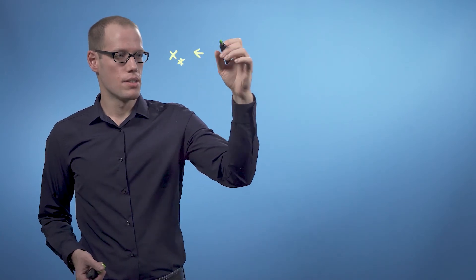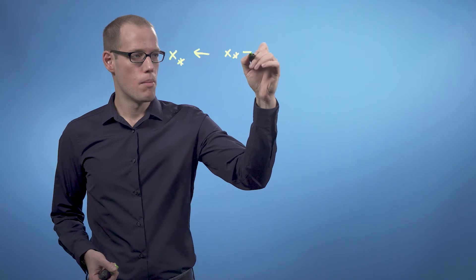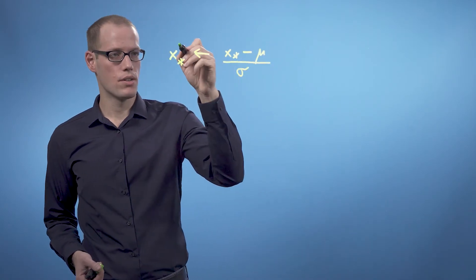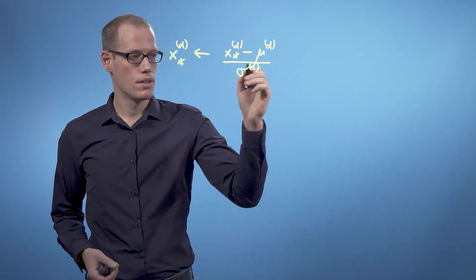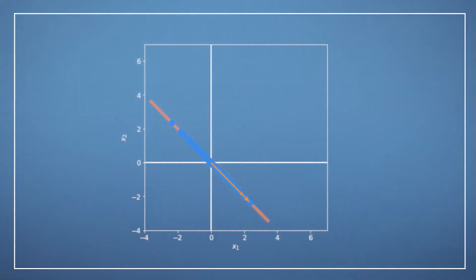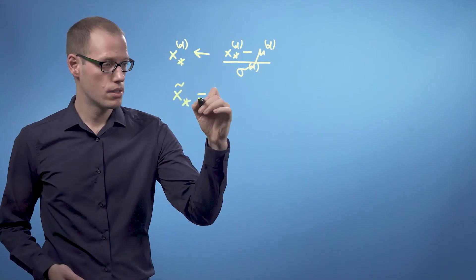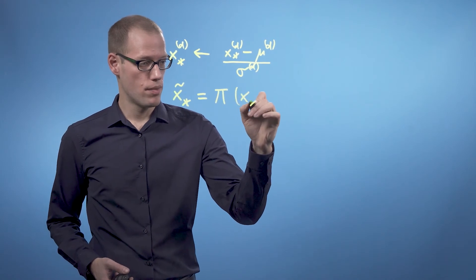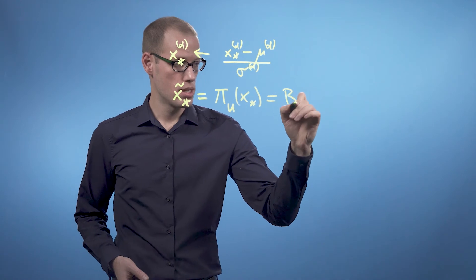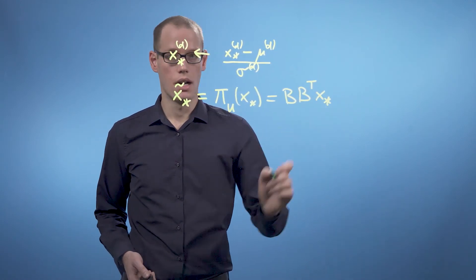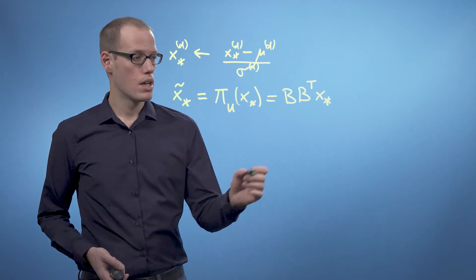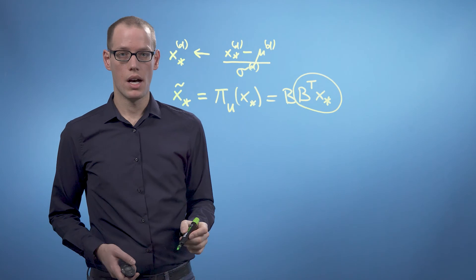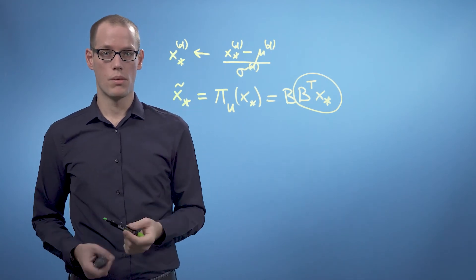So we are going to have a new x*, and the new x* is going to be the old x* minus the mean of the data set, divided by the standard deviation, and we do this for every dimension in x*. Now we can get the projection of x* as x* tilde — the projection onto the principal subspace U — as B times B transpose times x*, where B is the matrix that contains the eigenvectors belonging to the largest eigenvalues as columns, and B transpose times x* are the coordinates of the projection with respect to the basis of the principal subspace.